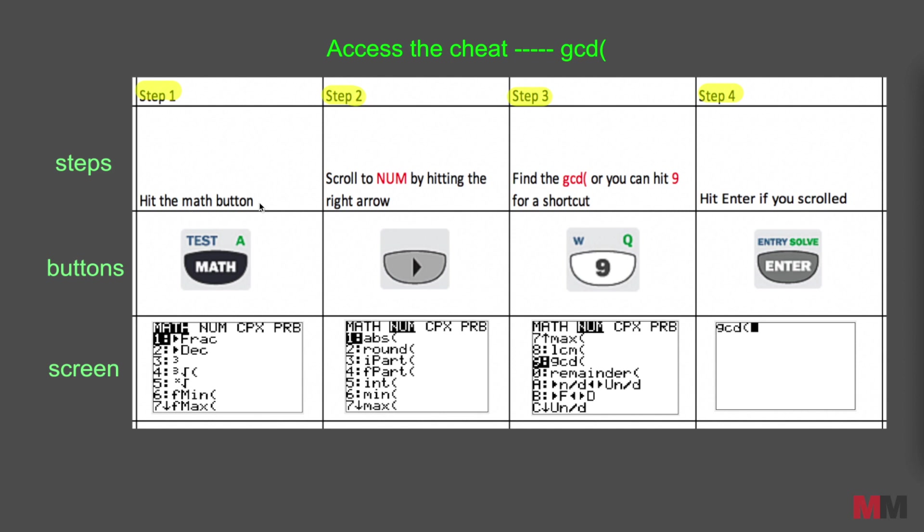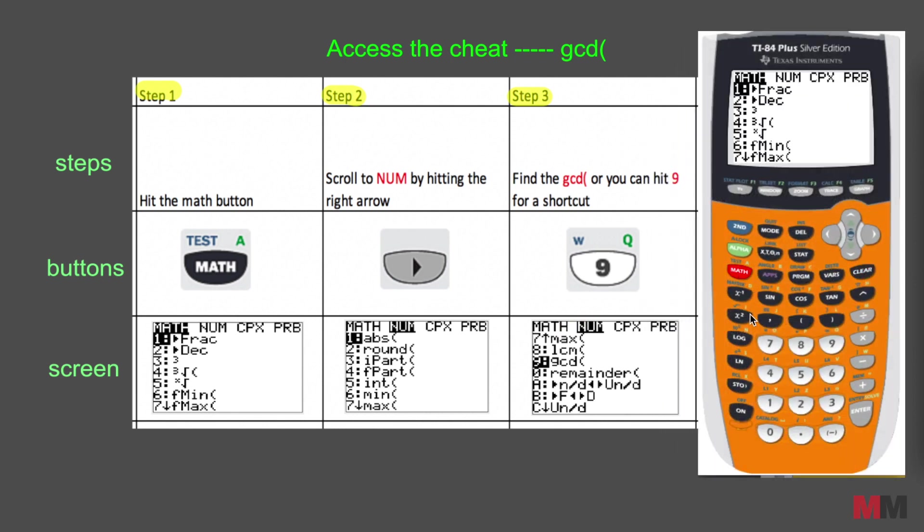So the keystrokes I want you to really memorize is that you just hit math, math button. The math button is right here, and then you press the arrow key to the right and quickly press 9 to get down to where it says greatest common divisor, or you can scroll down to it.